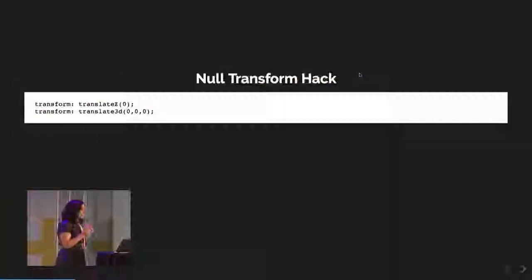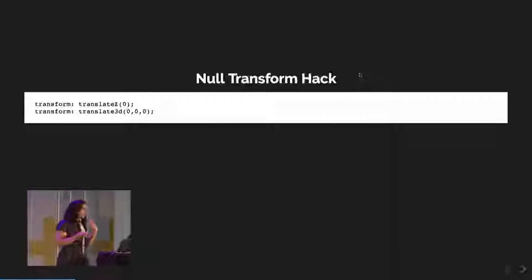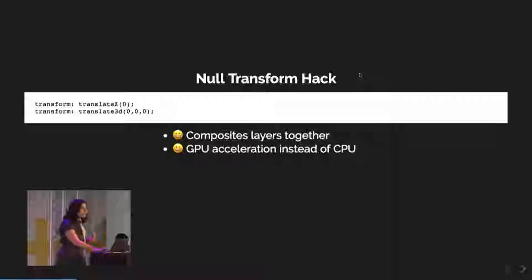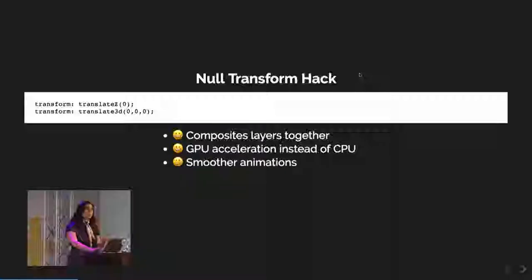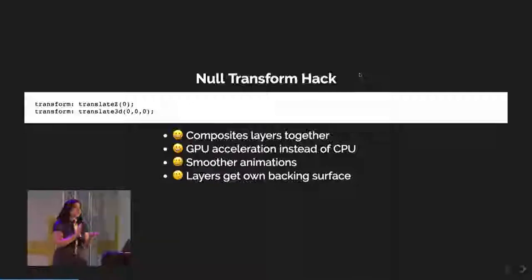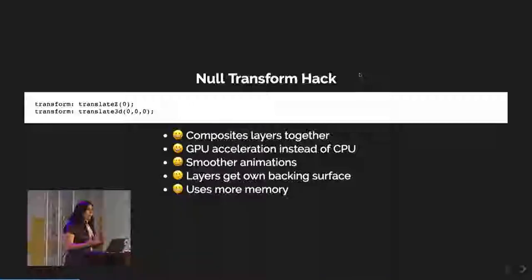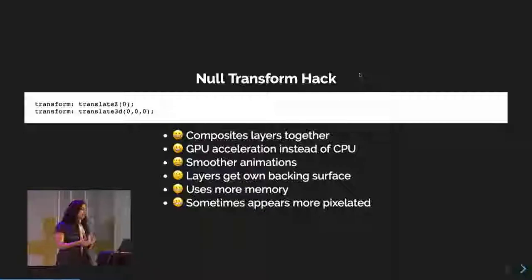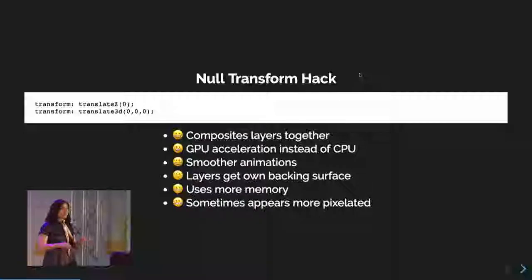The next thing is the null transform hack — where you'd do transform translateZ or translate3D 0,0,0. The pros are it composites layers, uses GPU acceleration instead of CPU for smoother animation, and layers get their own backing surface. The cons are it uses more memory, you have to watch battery usage especially on mobile, and things can appear more pixelated. So there are pros and cons.